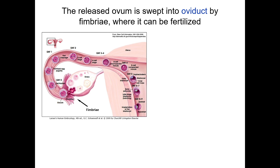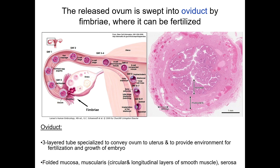The uterine tubes, or fallopian tubes, or oviduct, consist of a pair of thin muscular tubes that stretch between the ovary and the uterus, although they do not attach directly to the ovary. They function to provide an environment for fertilization of oocytes and to transport the zygote to the uterus. The oviduct is a three-layered tube consisting of an elaborately folded mucosa, a thick muscularis containing interwoven layers of longitudinal and circular smooth muscle, and a very thin serosa.